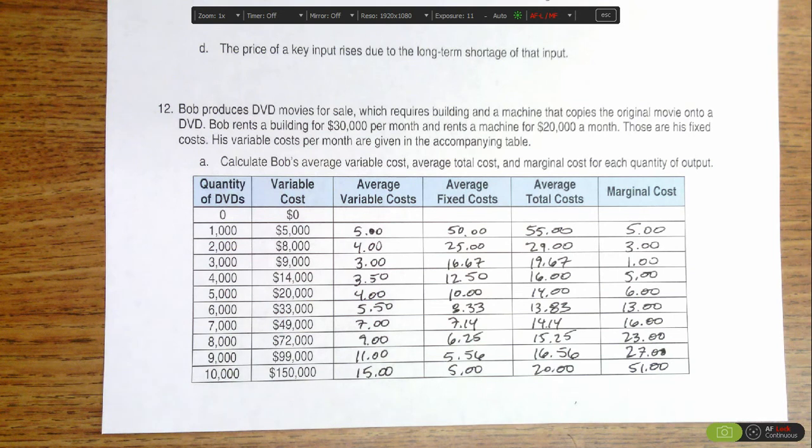This portion of the question is asking what would happen if there were free entry into the industry and every firm was like Bob's with the same costs. So we're perfectly competitive and we assume that the price of a DVD is $25. So the first question is: what is Bob's profit?